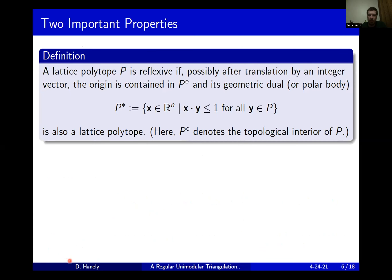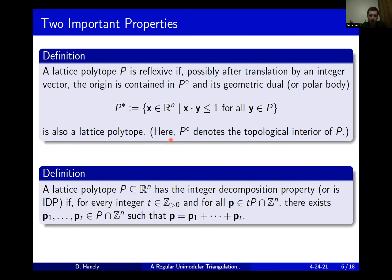There are going to be two different properties of polytopes that are of interest to us for this project. The first is what it means for a lattice polytope to be reflexive. We say a lattice polytope is reflexive if, possibly after translation by some integer vector, the origin is contained in the strict interior — the relative interior — of the polytope. Furthermore, its geometric dual is going to be a lattice polytope, where the geometric dual is defined as the set of all points in Euclidean space such that their inner product with any point in the polytope is less than or equal to 1. The second property is the integer decomposition property, abbreviated IDP.